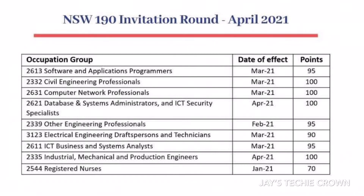Similarly, for civil engineers with 100 points and computer network professionals with 100 points. For 2621, which is database and system administrators and ICD security specialists, whoever applied as of April 2021 with 100 points were invited. Engineering professionals with 95 points as of February 2021, electrical engineers as of March 2021 with 90 points, and business and system analysts with 95 points as of March 2021.